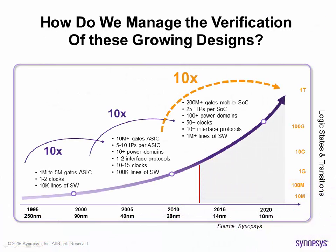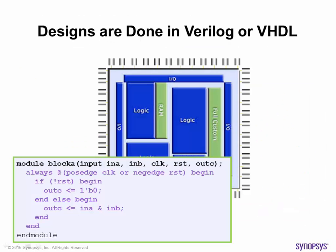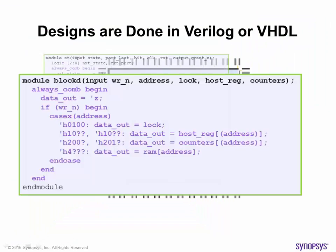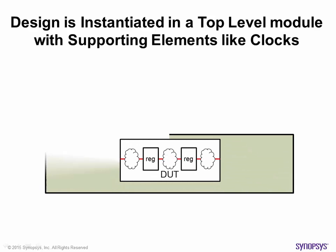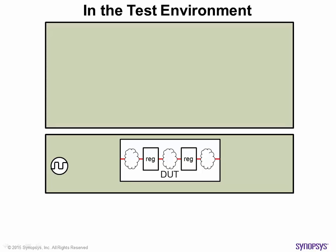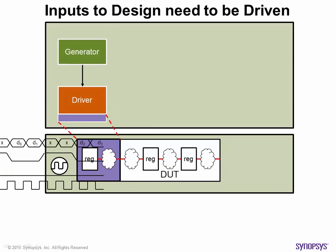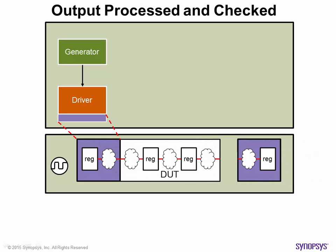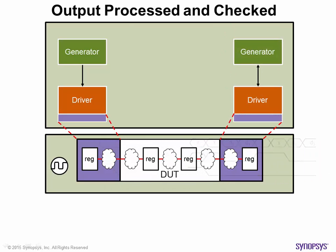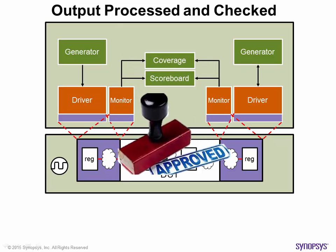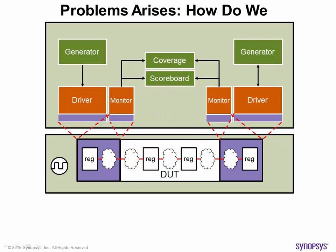Designs are getting more complex. How do we manage the functional verification of these designs? RTL designs are typically done in Verilog or VHDL. Let's represent the design as a segment of a pipeline. The design is typically instantiated in a top-level module with supporting elements like clock generators. We then build a test environment where the inputs to the design are driven and the outputs processed and checked.